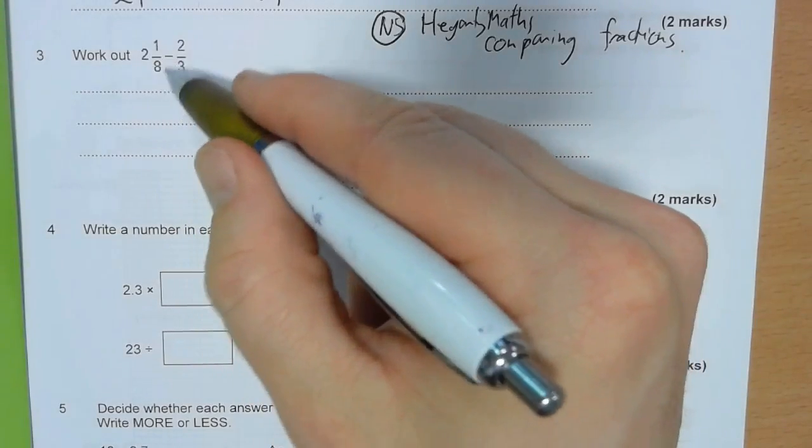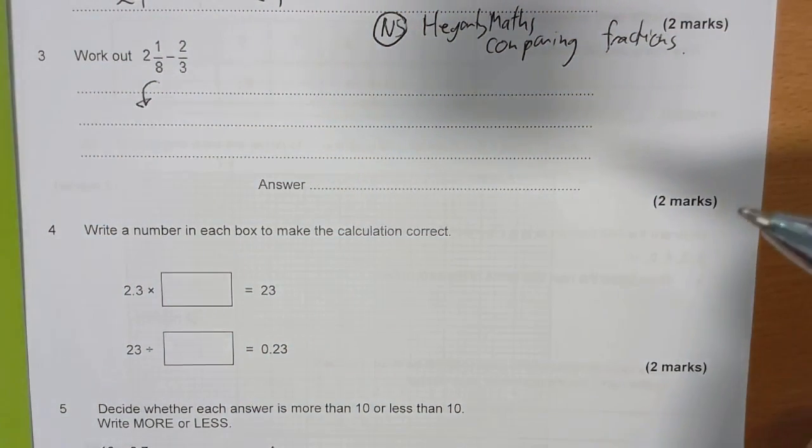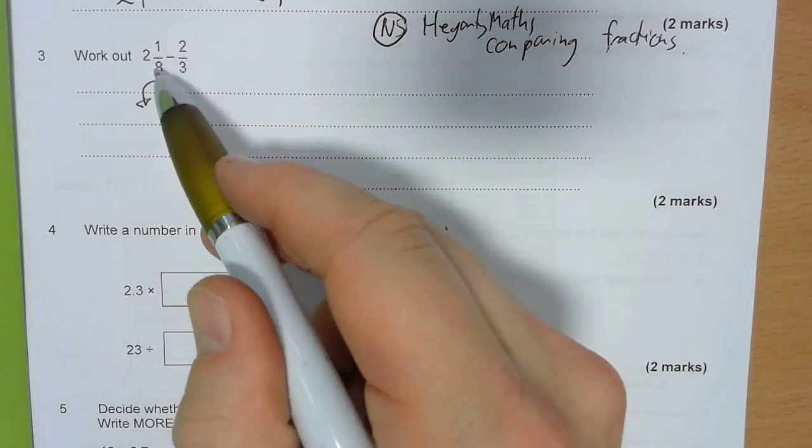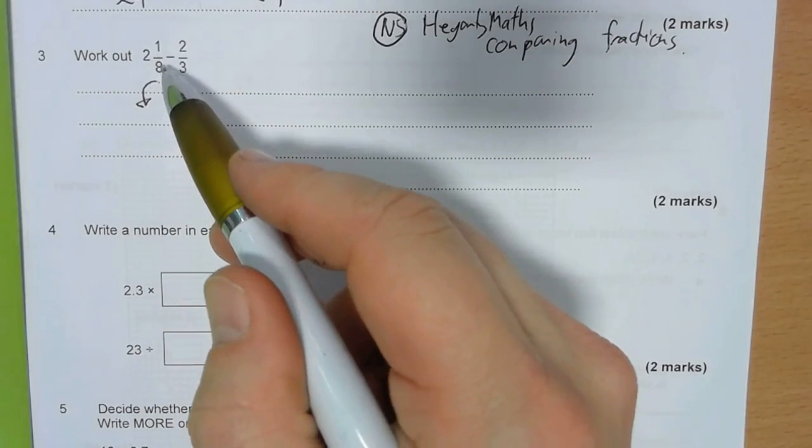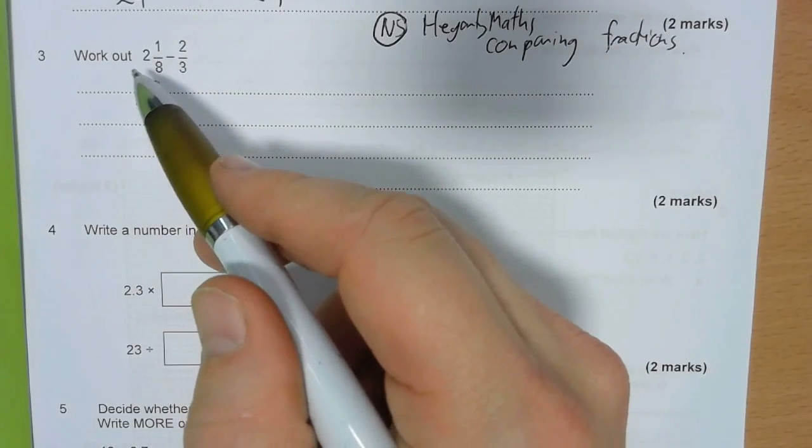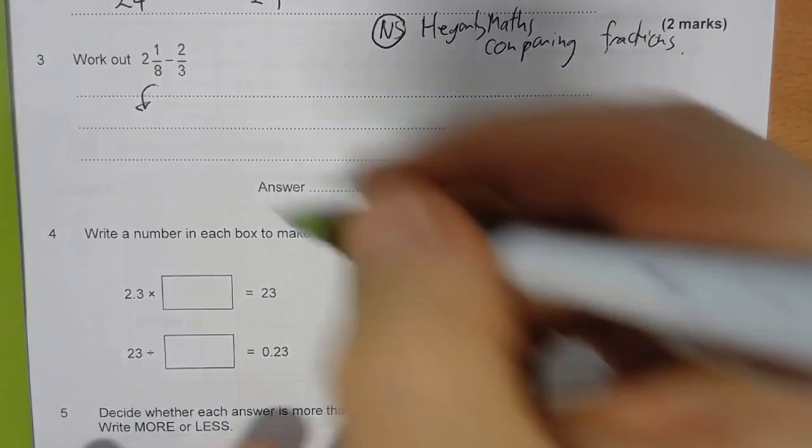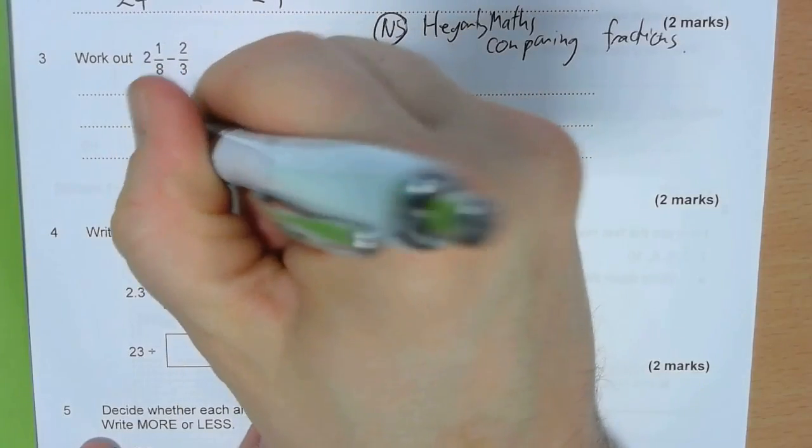Before I do that, though, this is a mixed number, and I want to convert that to an improper fraction to help me to subtract it. So, how many eighths have I got? I've got 16 eighths in two wholes, one whole is 8 eighths, two wholes is 16 eighths, and I've got one more, so I've got 17 eighths.